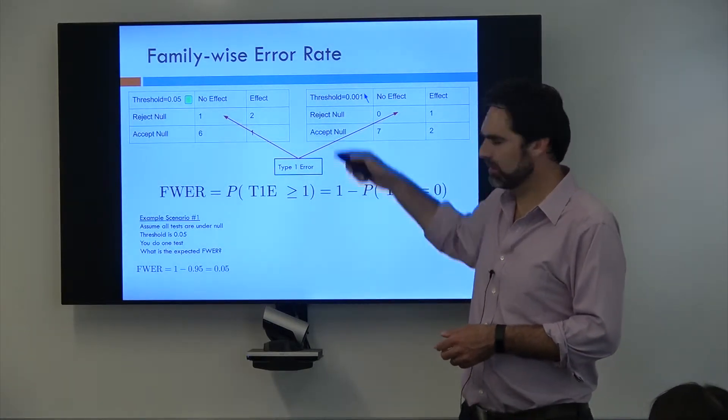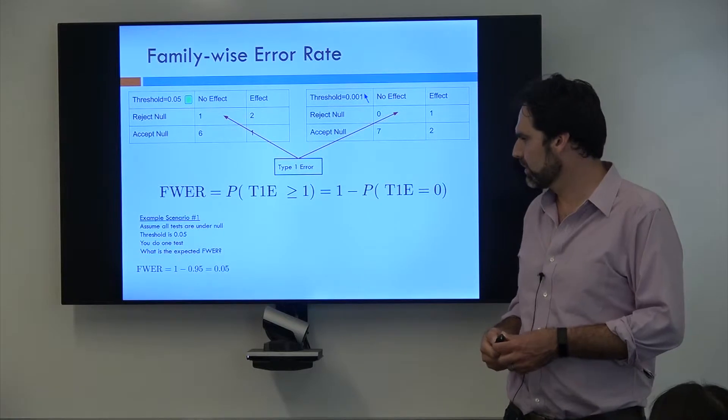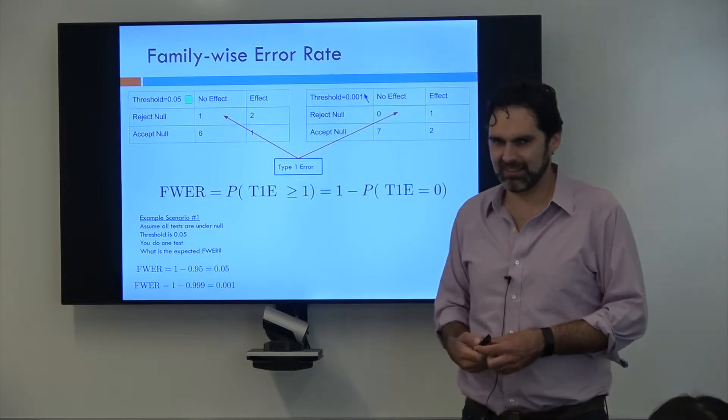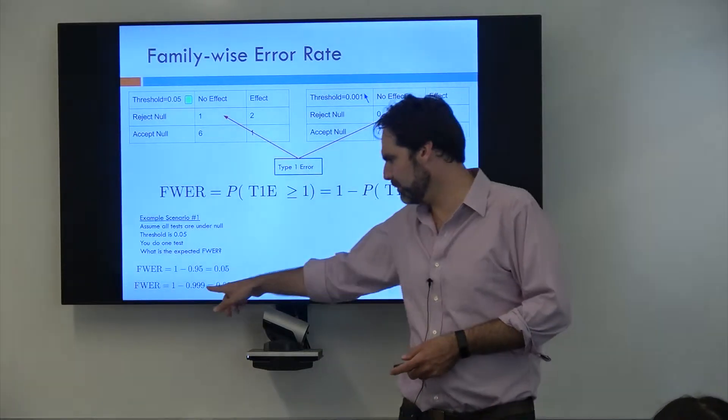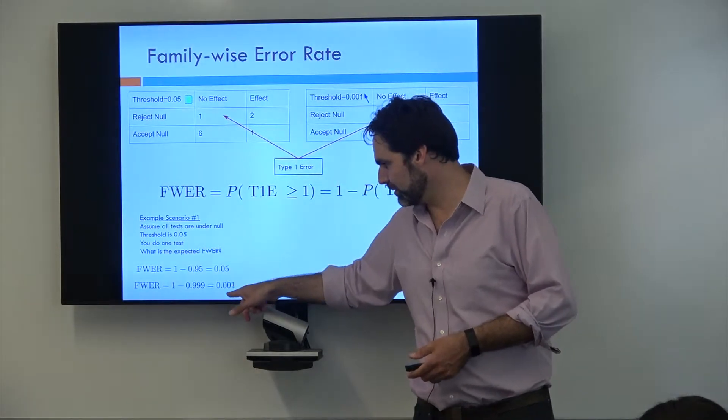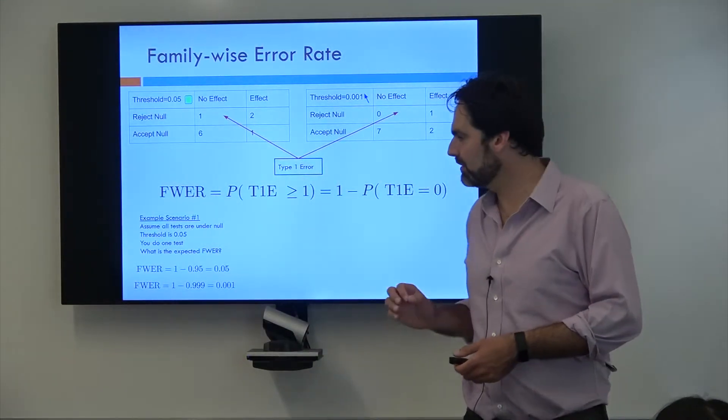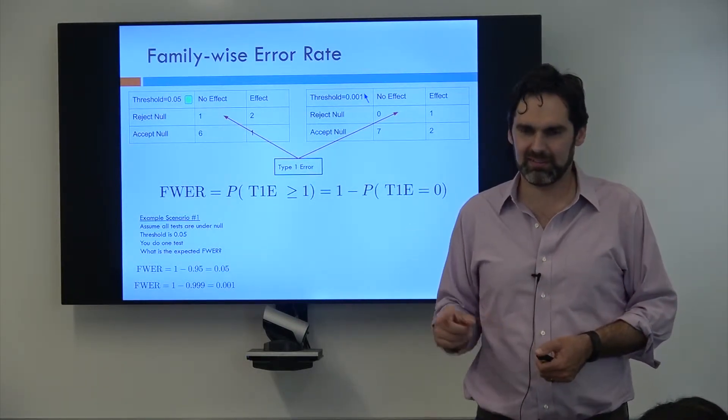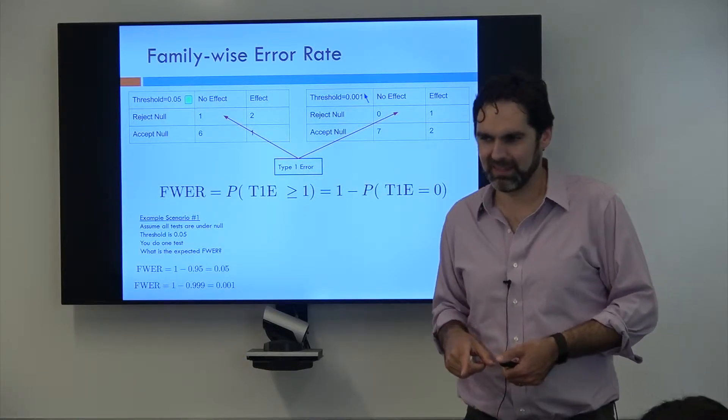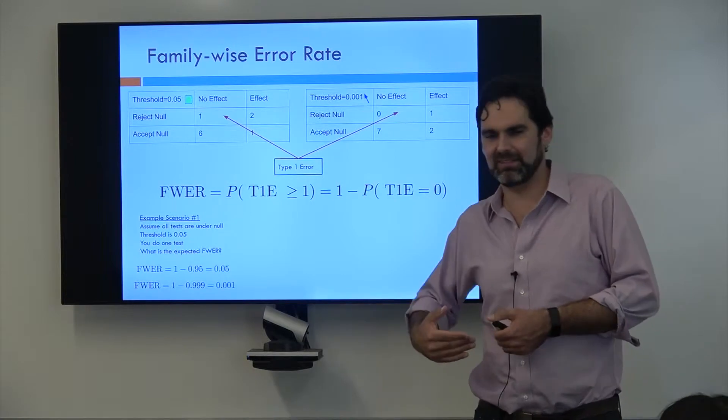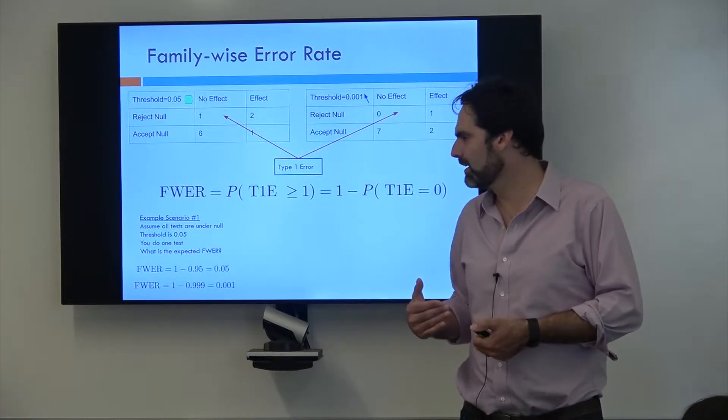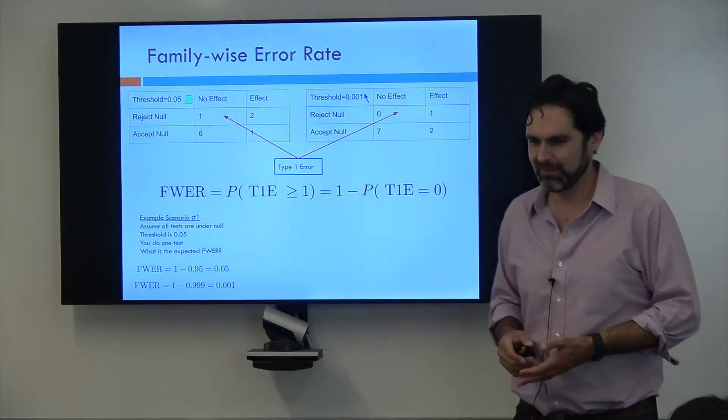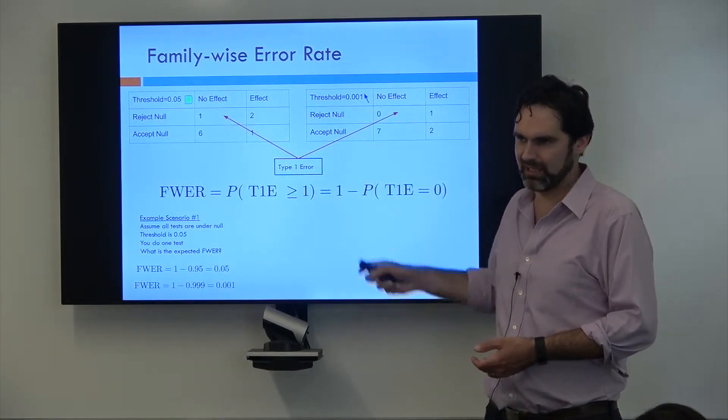And what if my threshold now is 0.001? What's my family-wise error rate going to be? It's the same thing, right? Because my probability of not a type 1 error is 0.999. So this point's kind of key: if you only do one test, whatever your significance threshold is, is also your family-wise error rate. A lot of times people want to control their family-wise error rate at 0.05. So if you're only doing one test, it's appropriate to use a significance threshold of 0.05, because you're controlling how many of these type 1 errors you have.